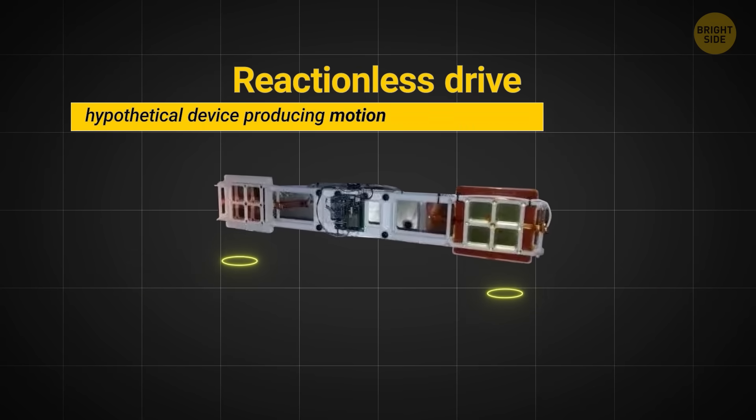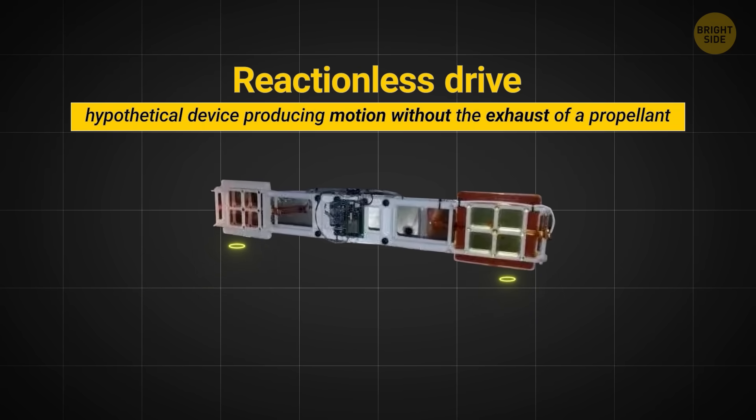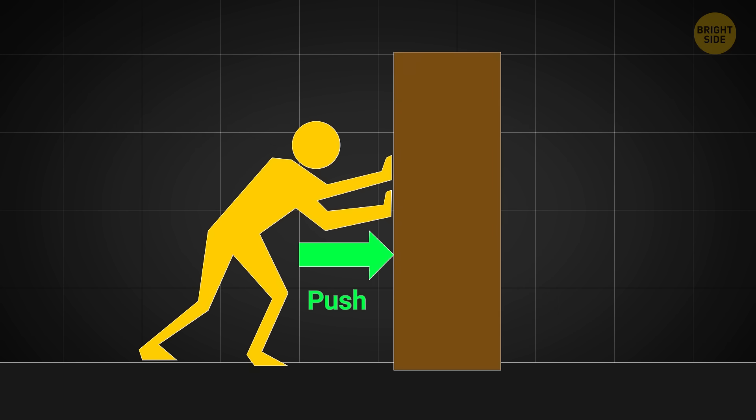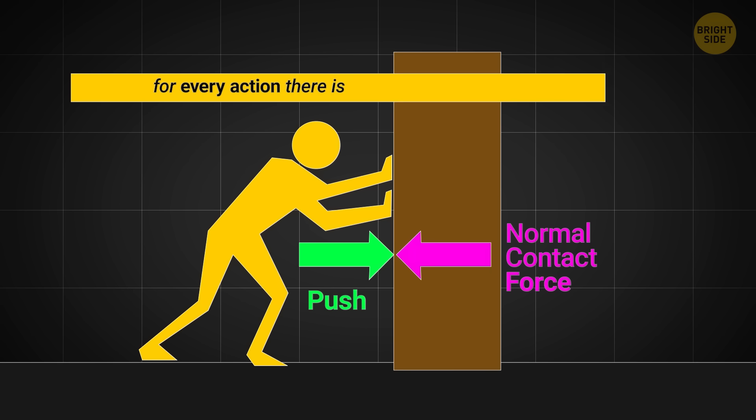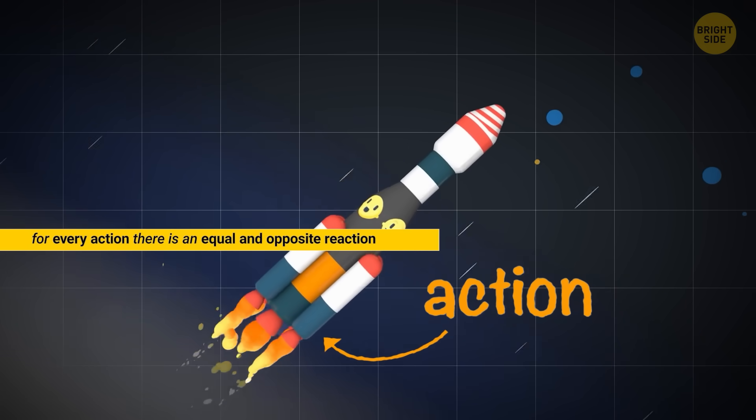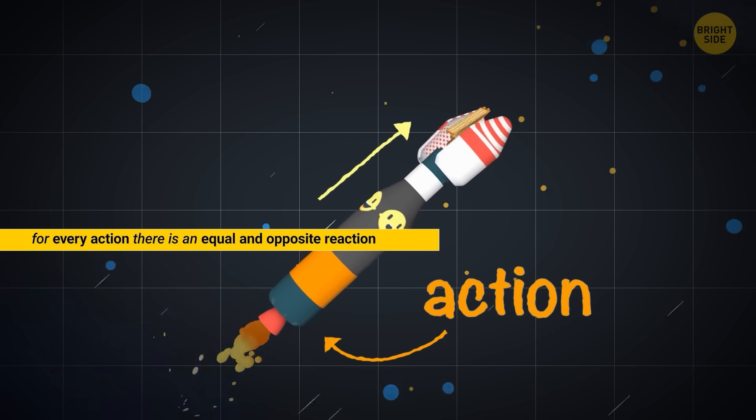They've built a machine that can lift itself in the air without any propellant. The team claims to have violated Newton's Third Law, the basic rule of our world that every action needs an equal and opposite reaction. For example, in rockets, you throw fuel out the back—that's action. Being pushed by it, the rocket goes forward—that's the reaction.